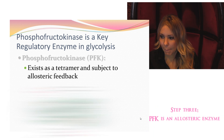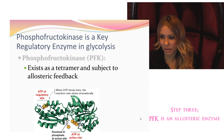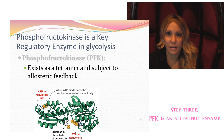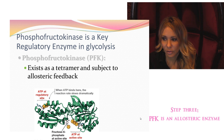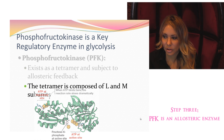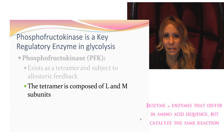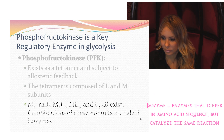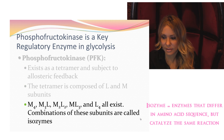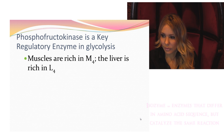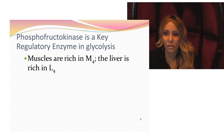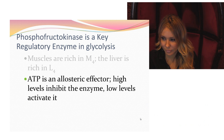PFK is a tetramer — it is an allosteric enzyme subject to allosteric feedback as well as covalent control. This tetramer has L and M subunits. L is for liver, M is for muscle. In liver cells you would see L4; in muscle cells you would see M4. In the blood you might see any combination, such as L2M2. All of the combinations exist, and we call those isozymes. Muscles are going to be very rich in M4s, and liver will be rich in L4s.